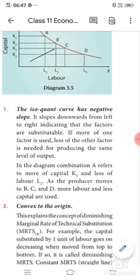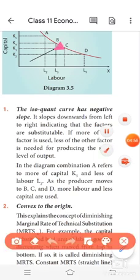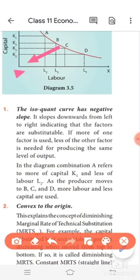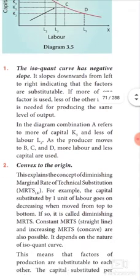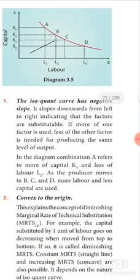The second property is that the isoquant curve is convex to the origin. This convex shape explains the concept of diminishing marginal rate of technical substitution (MRTS). It indicates the rate at which one factor is substituted for another while maintaining the same level of output.